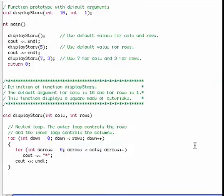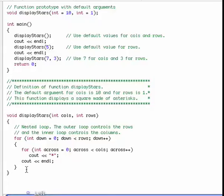This is the first of two videos on default parameters. Let's take a look up here at a prototype. It says void displayStars int equals 10, int equals 1. These are called default parameters or default arguments.